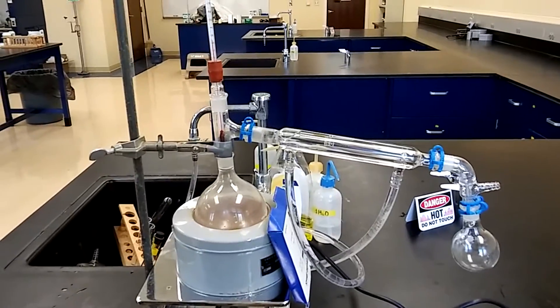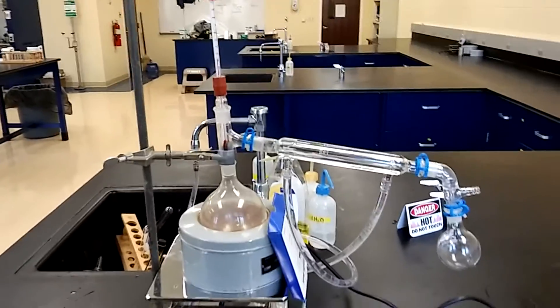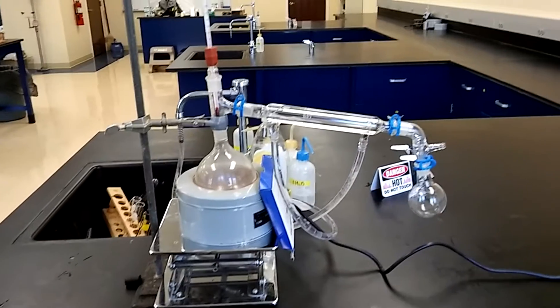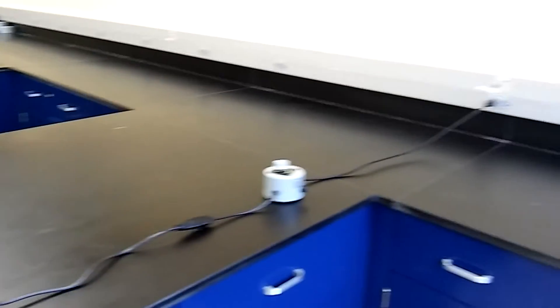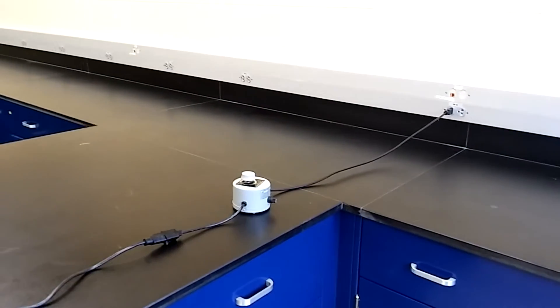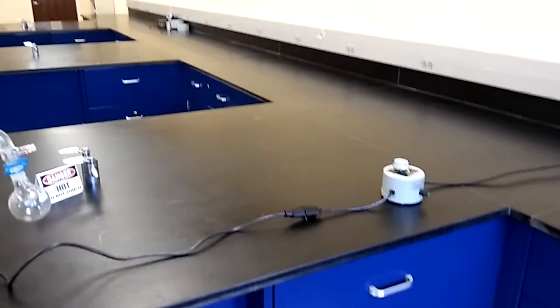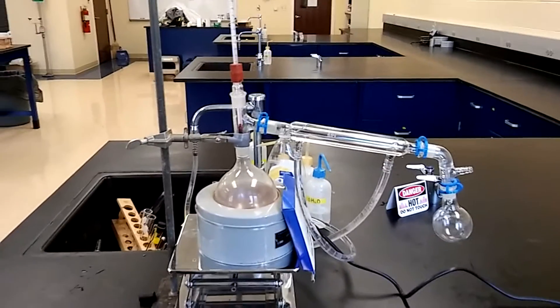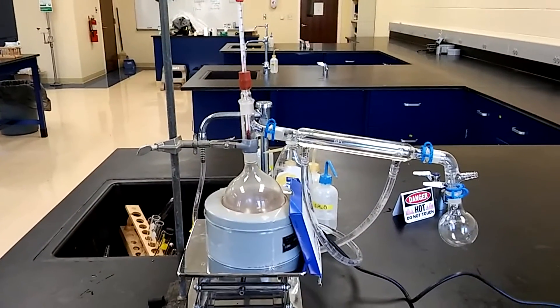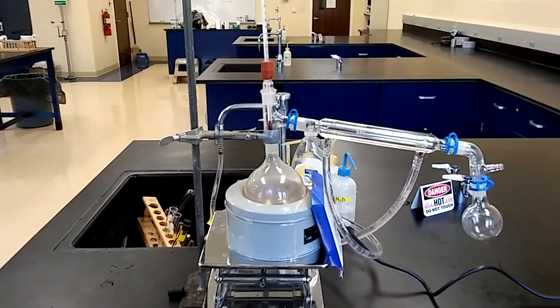I had my distillation set up ready to go. In fact, it's already on. I got my jack stand, a mantle hooked up to a rheostat, and then to the wall unit. The rheostat is currently set about 20. Keep in mind, we have a really small quantity of the sample that we're trying to distill, so you really don't want to heat it too quick.